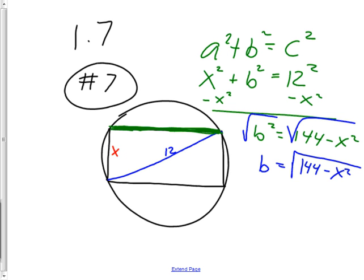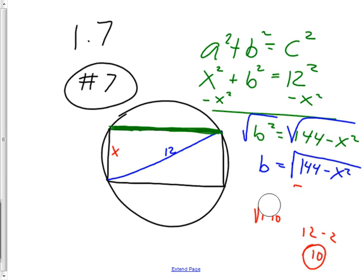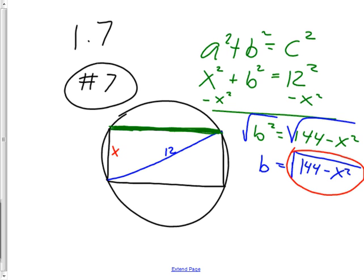Can you just take the square root of each piece and say B = 12 − x? No. Try a real number: √(144 − 4) = √140, which is not 10, even though 12 − 2 = 10. You can't take the square root of the individual terms separately — you have to leave it as √(144 − x²). Now all your sides are labeled; if you haven't gotten this far, you need to catch up.